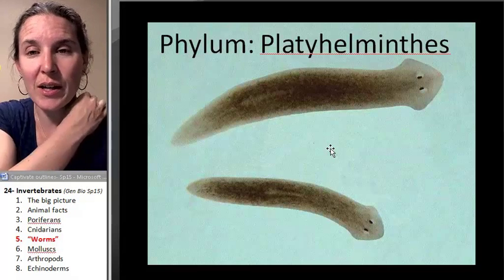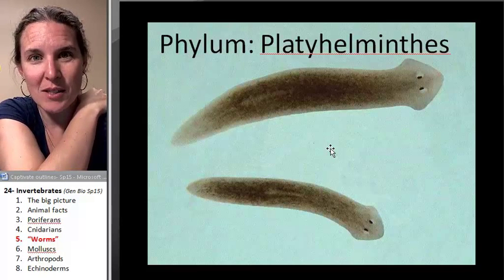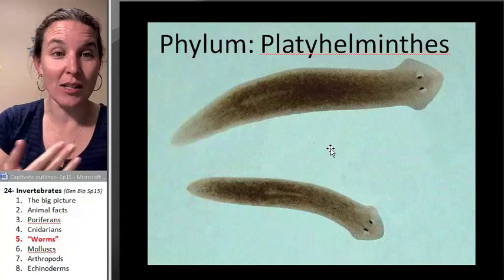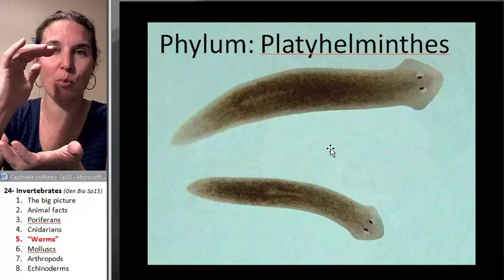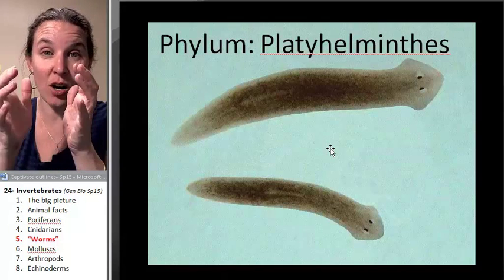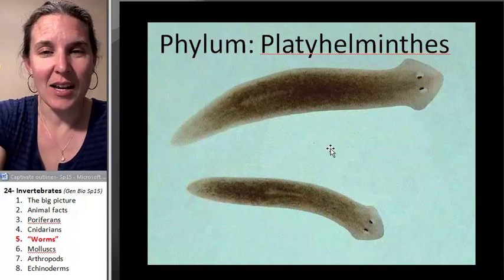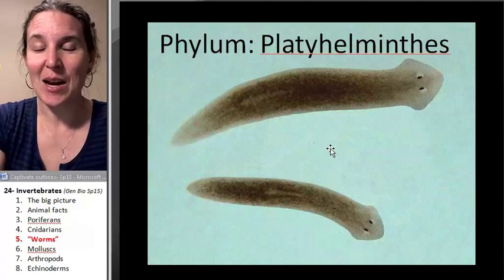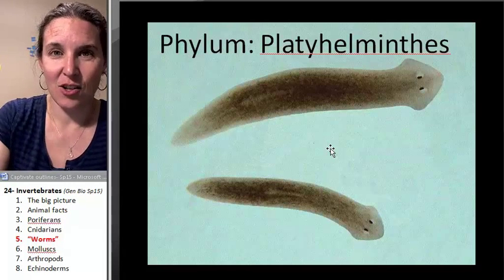This group also includes tapeworms and liver flukes. I've got a jar of horse tapeworm — one tapeworm that came from one horse — and it's a jar this big. It looks like a whole bunch of egg noodles in there, but those are tapeworms. Parasites are so cool. Tapeworms just chill in your guts and eat your food.